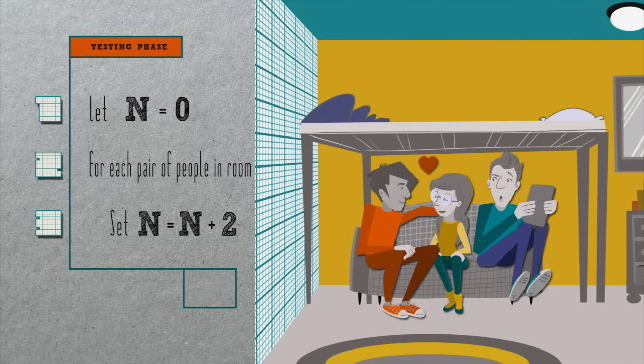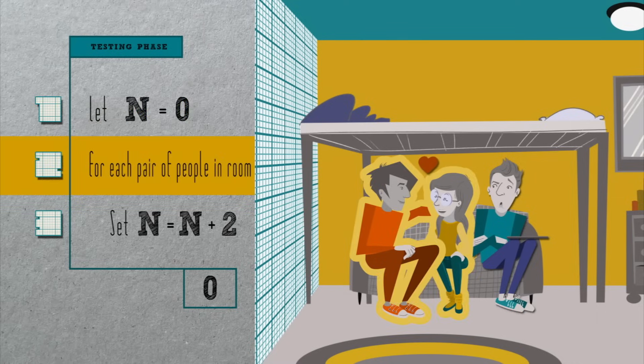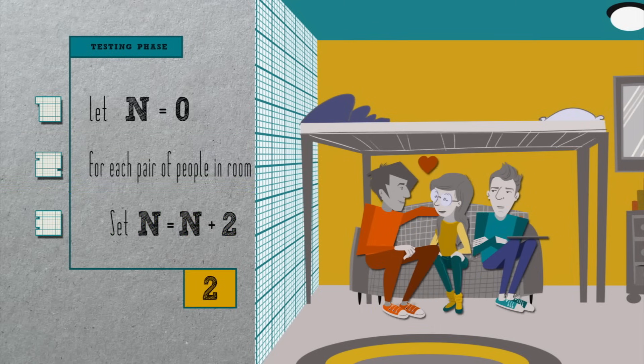But what if there are three people in the room? How does this algorithm fare? Let's see. In line one, we initialize n to zero. For a pair of those people, we then increment n by two, but then what?